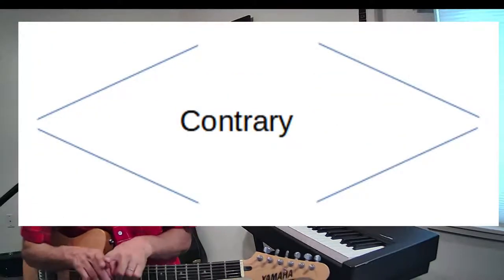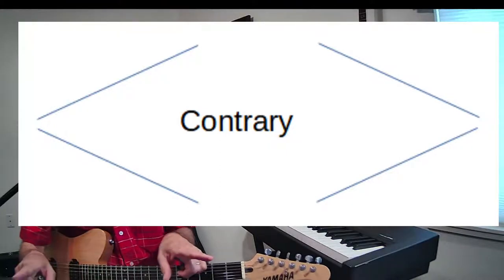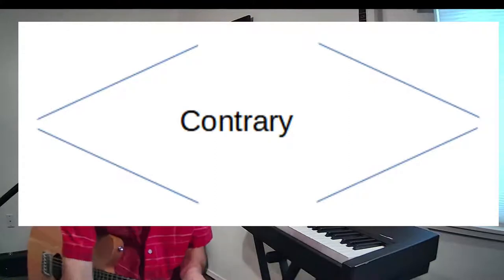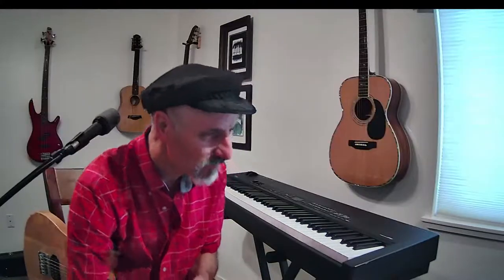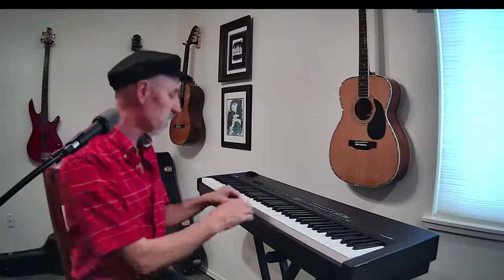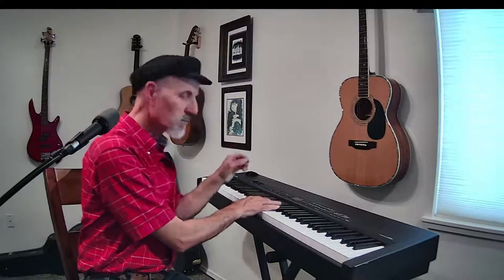Now let's go to the third kind of motion: contrary motion. Contrary motion is when you have two notes moving in different directions — they're either coming together or going apart. Let me do something on the piano so you can hear what contrary motion is. I've got notes that are coming down and notes that are going up. Or I could go the other direction — that would be contrary motion also.